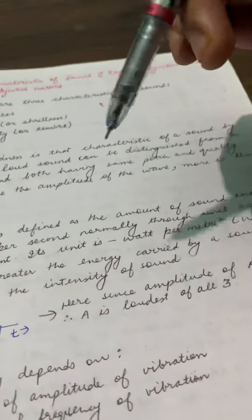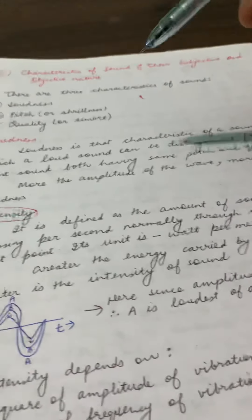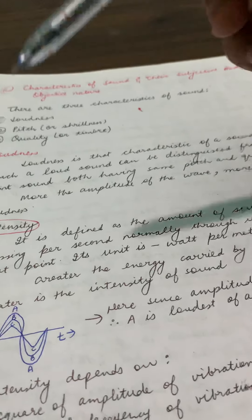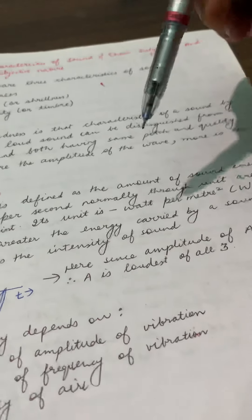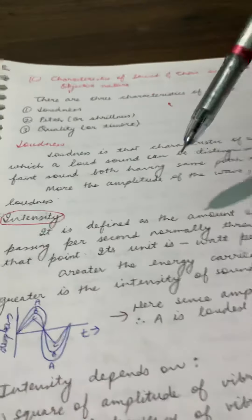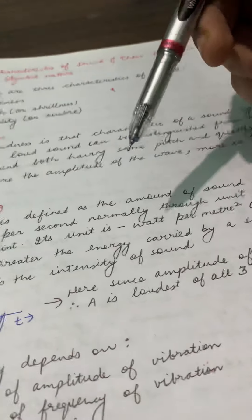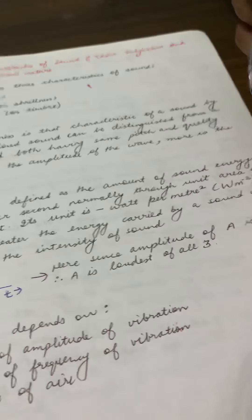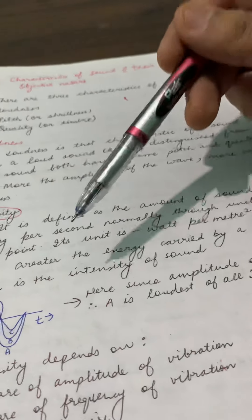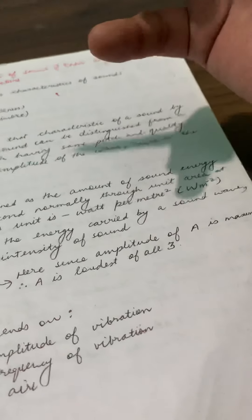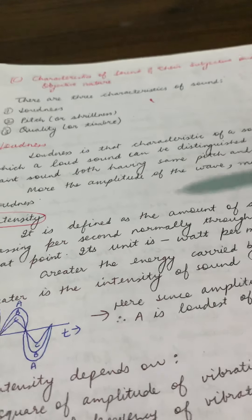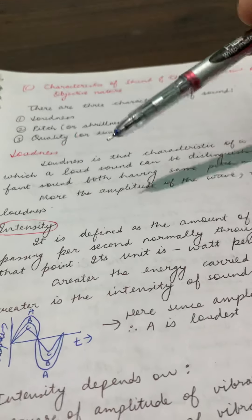In one second, through one meter square area, how much sound energy can pass — that is called intensity. Its unit is watt per meter square. The greater the energy the sound wave carries, the greater the intensity of the sound. This means loudness depends on the energy carried by the sound wave.